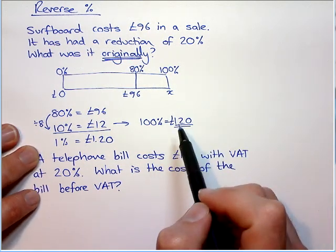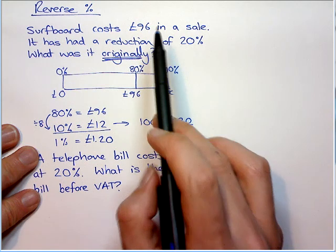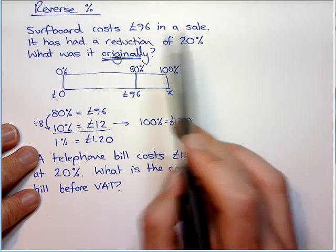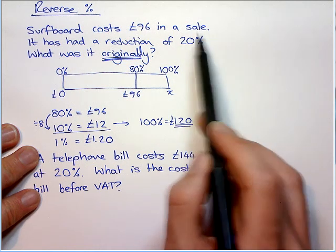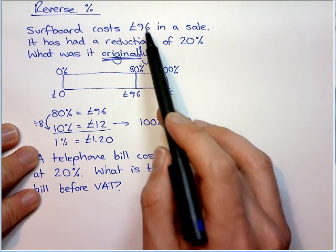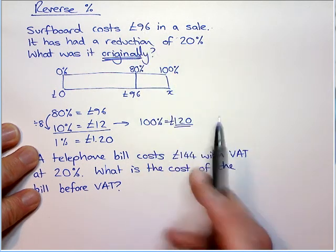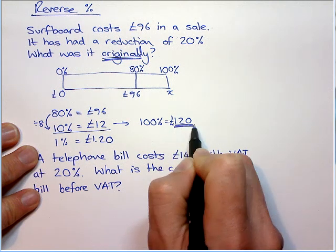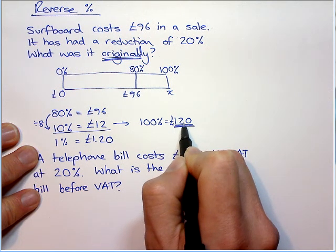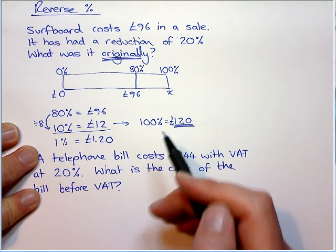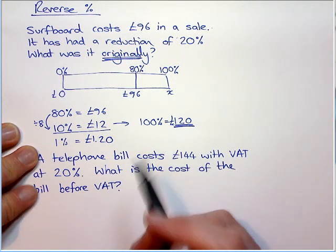Now, what a lot of people do is they find 20% of the sale price and then add it on. But what you'll realise is that if you then find 20% of that result and take it off, you will not get back to the original. This method is wrong. My answer is £120. If I find 20% of £120 — 10% is £12, so 20% is £24 — and take that off, I get back to £96. This is the only way you can answer these questions.